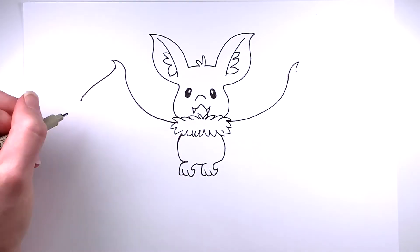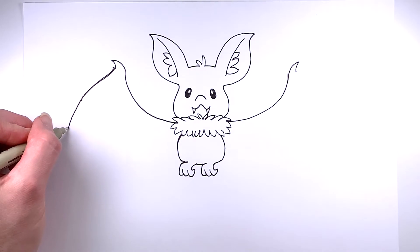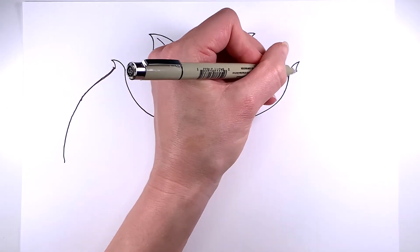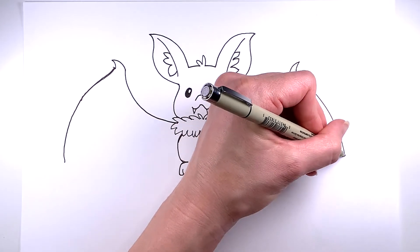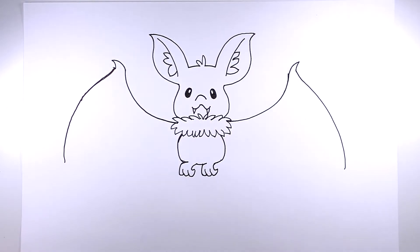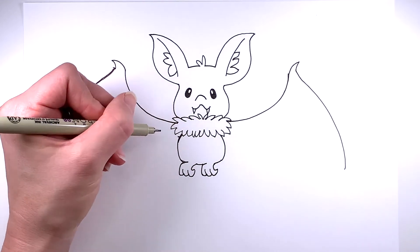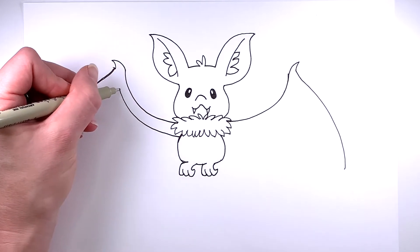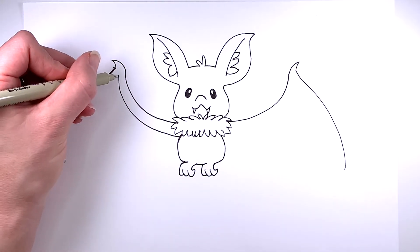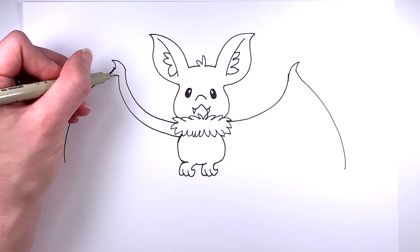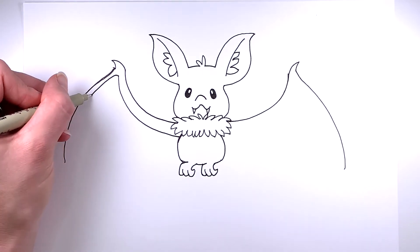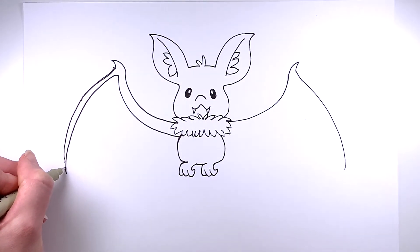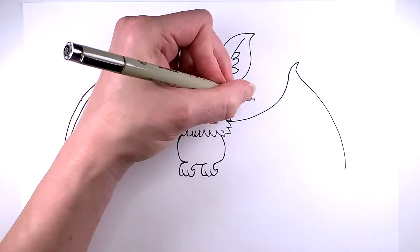And then a line that goes down, just a nice long curve going down toward the bottom of your paper. And then come back to the bat's body. And just follow that curve that you just made for the first part of the wing. And then a small curve underneath that hook. And then come back down to finish up that main part of the wing. Just repeat the same thing on the other side.